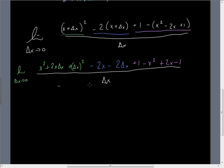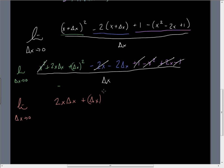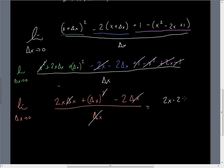Looking at this, we can start canceling: negative x² with positive x², positive 2x with negative 2x, positive 1 with negative 1. What remains is the limit as Δx tends to 0 of (2x·Δx + (Δx)² − 2Δx) all over Δx. Every term on top has a common factor of Δx, so we cancel top and bottom, leaving 2x + Δx − 2. As Δx tends to 0, that term vanishes and our final answer is 2x − 2.